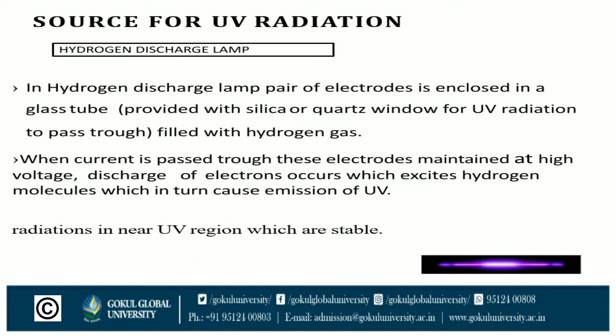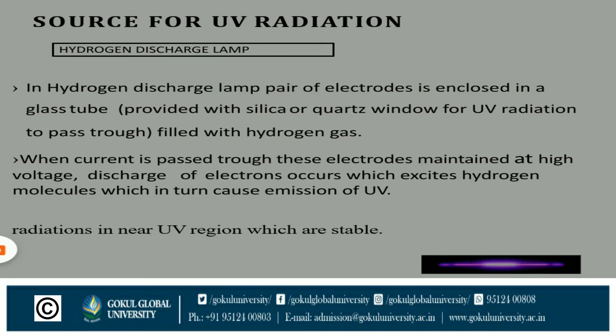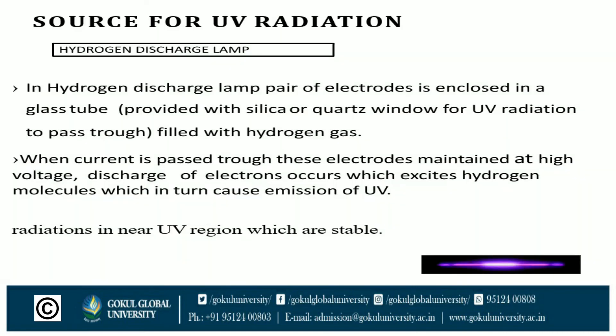The source for UV radiation: the hydrogen discharge lamp. In the hydrogen discharge lamp, a pair of electrodes is enclosed in a glass tube filled with hydrogen gas. When current is passed through these electrodes maintained at high voltage, discharge of electrons occurs which excites hydrogen molecules, which in turn cause emission of UV radiation. The hydrogen molecules are excited from the ground state to the excited state and give UV emission.